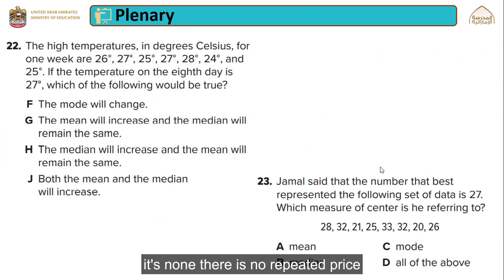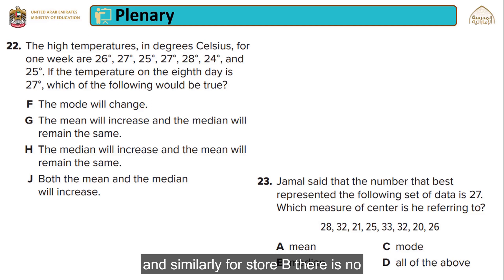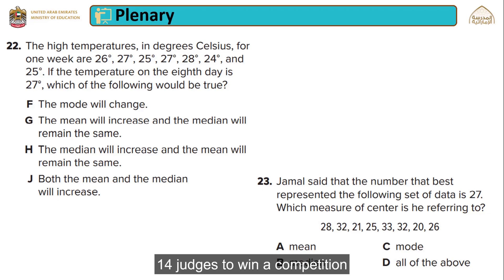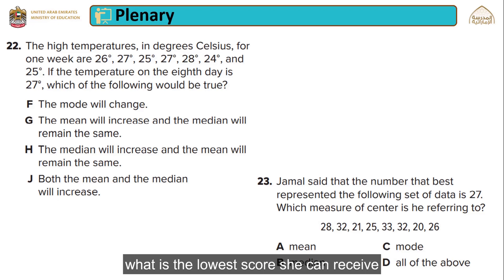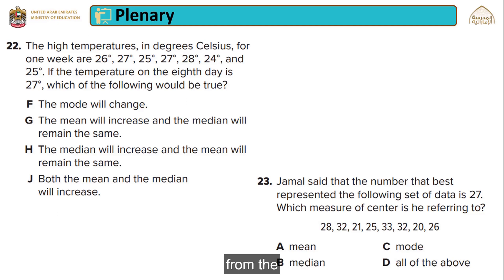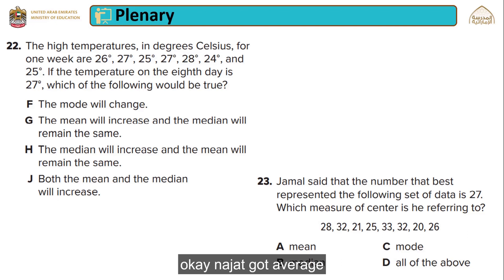Closing question: The high temperatures in degrees Celsius for one week are 26, 27, 25, 27, 28, 24, and 25. If the temperature on the eighth day is 27, which of the following would be true? The mode will change; the mean will increase and the median will remain the same; the median will increase and the mean will remain the same; or both mean and median will increase. Adding one value makes it an even number of values, so the median will increase, and the mean will also increase because this value is greater than the previous mean. So option D — both mean and median will increase — is the correct answer.